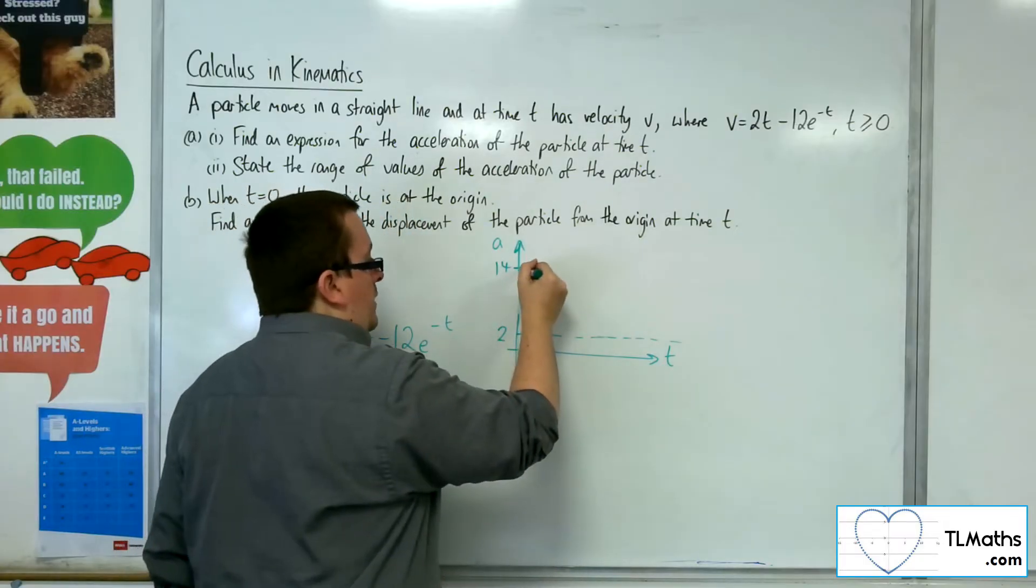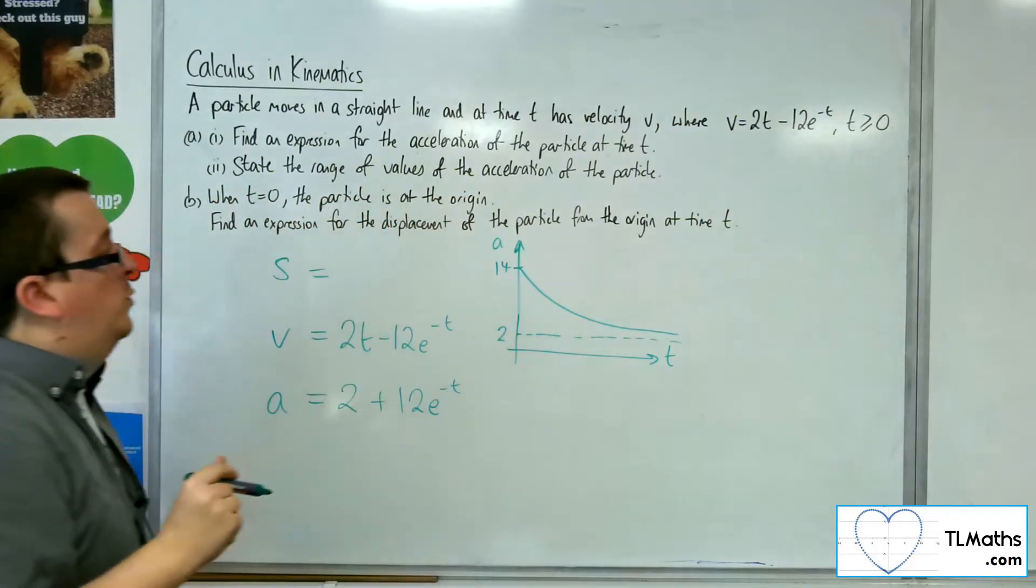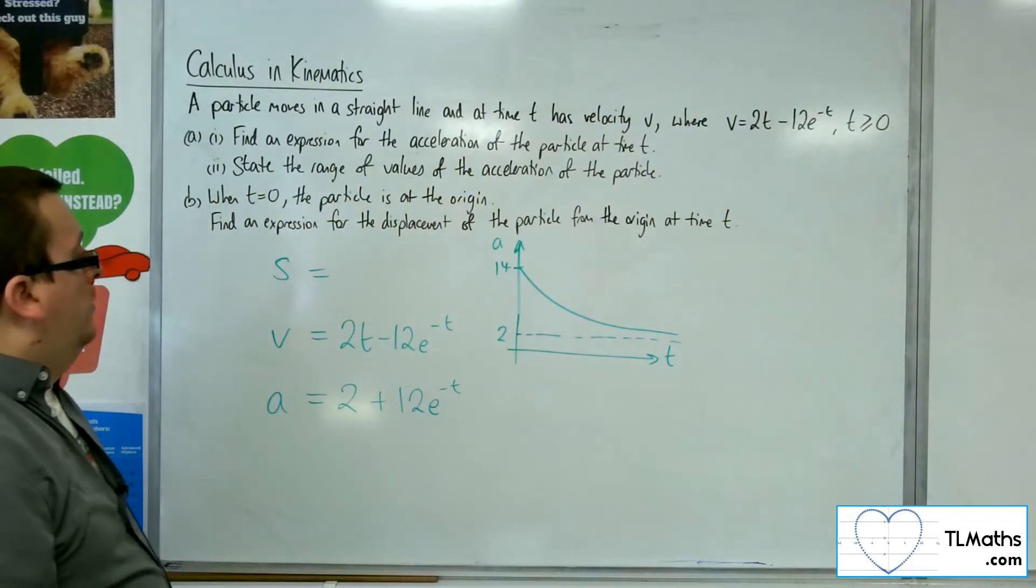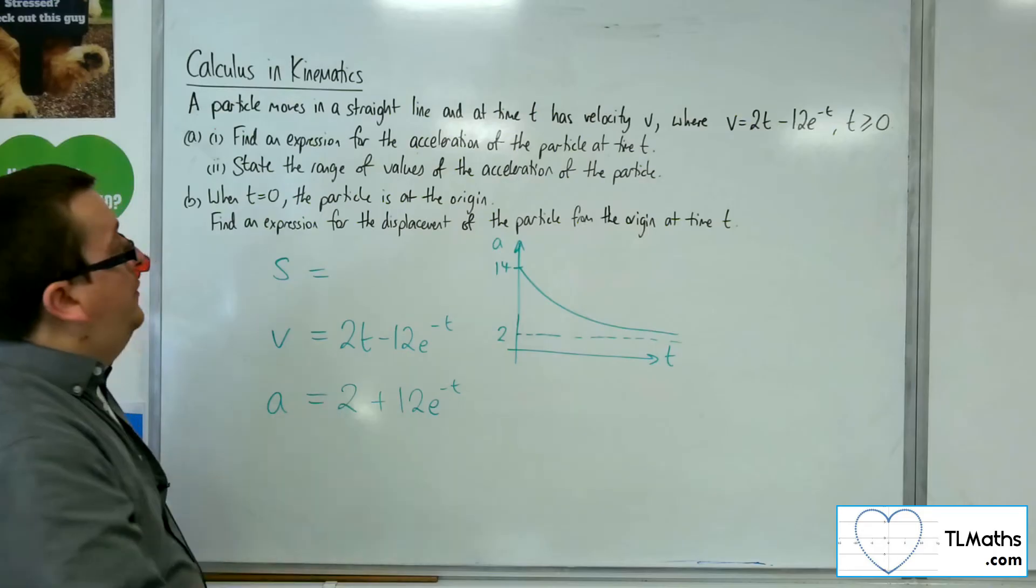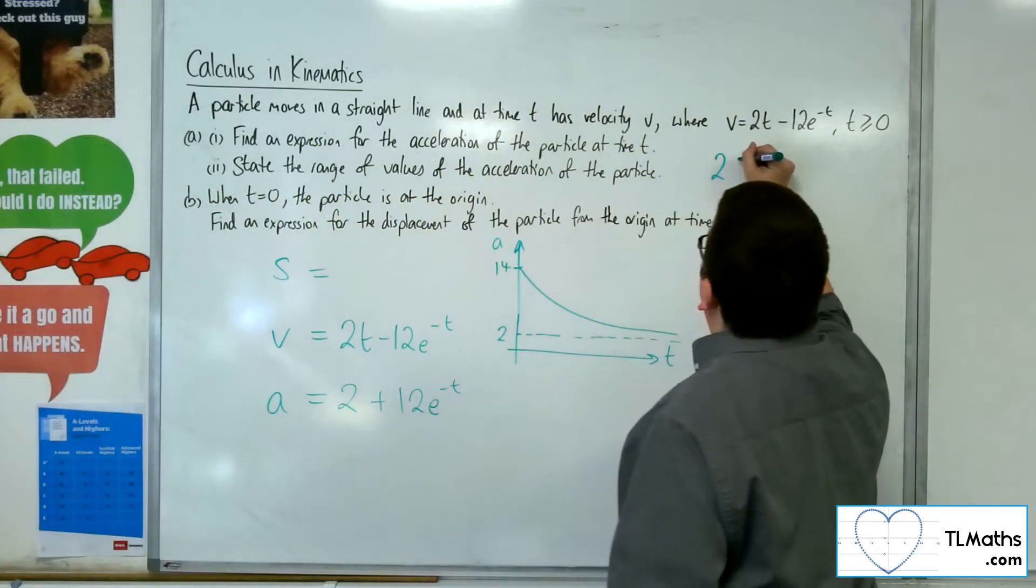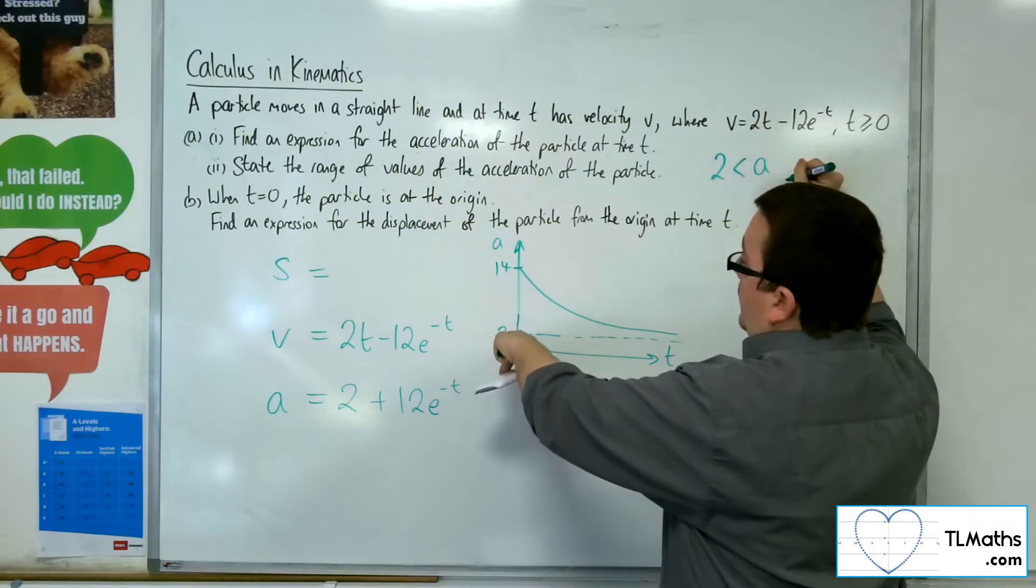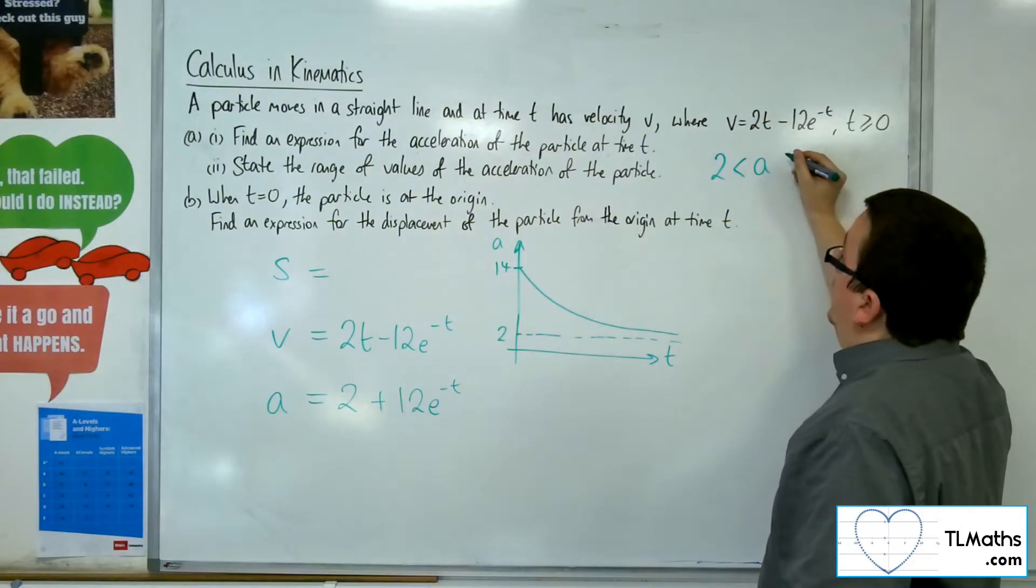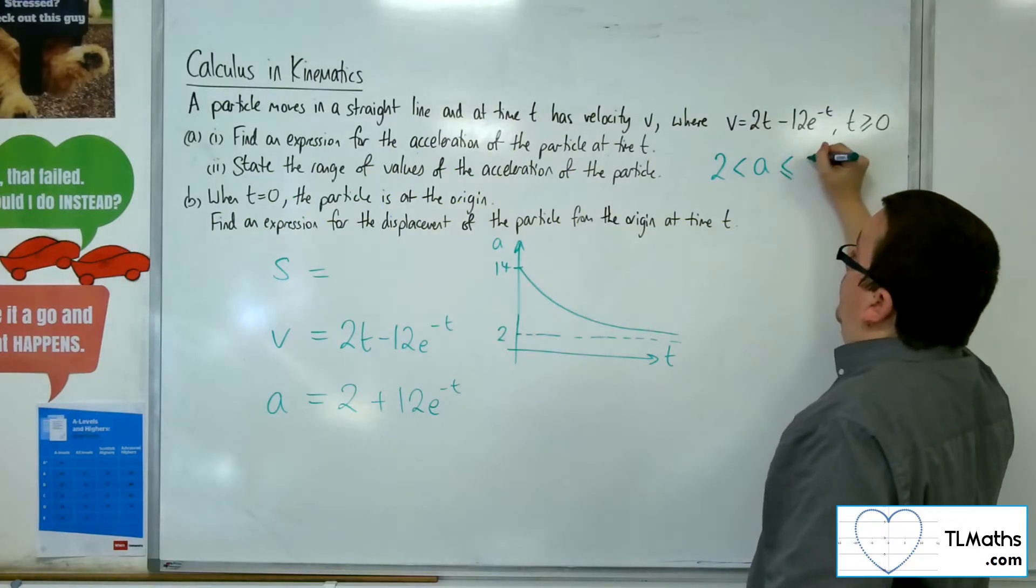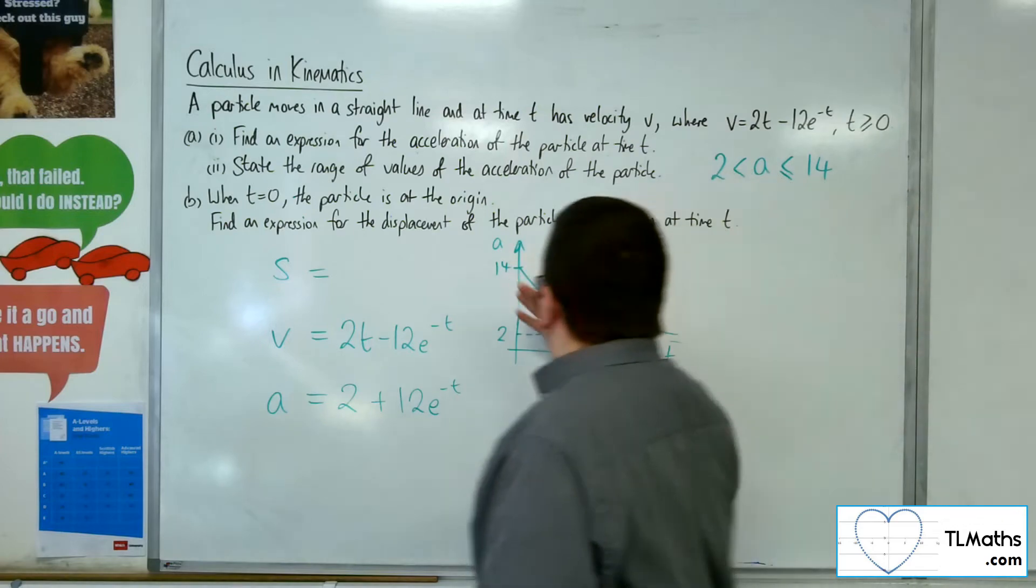So this is what the curve will look like, tending towards that asymptote. So the range of values of the acceleration, well, it's going to be greater than 2, because it can't hit that asymptote. But less than or equal to 14, equal to when t is 0, but otherwise less than.